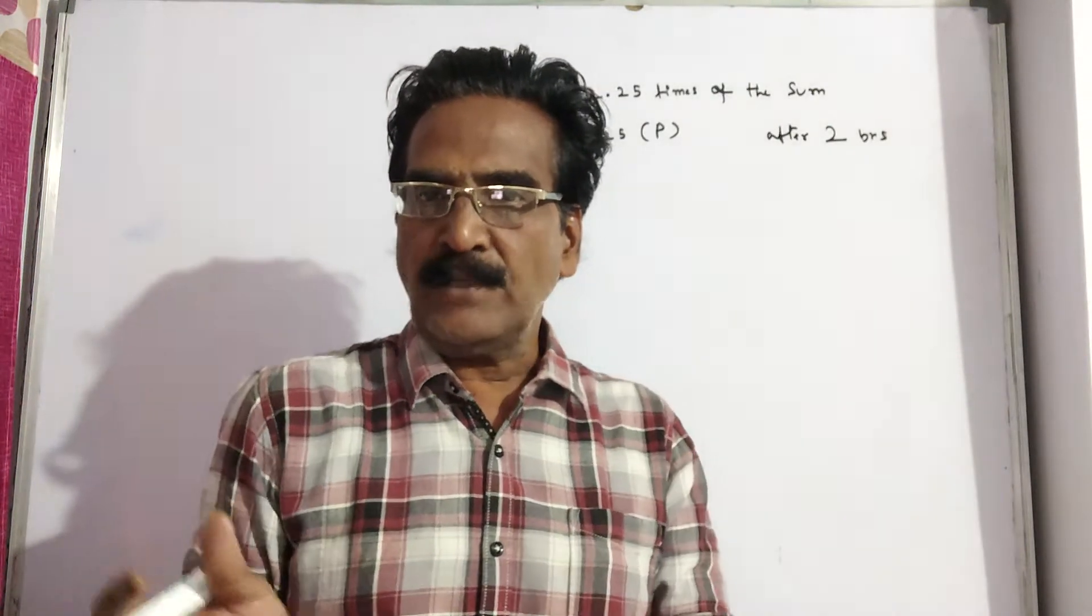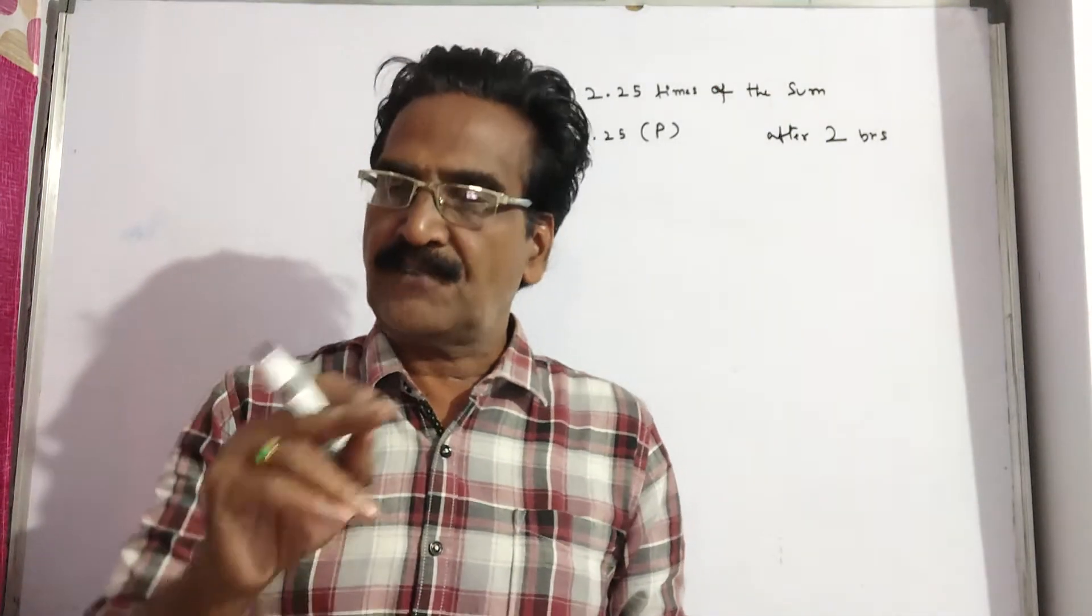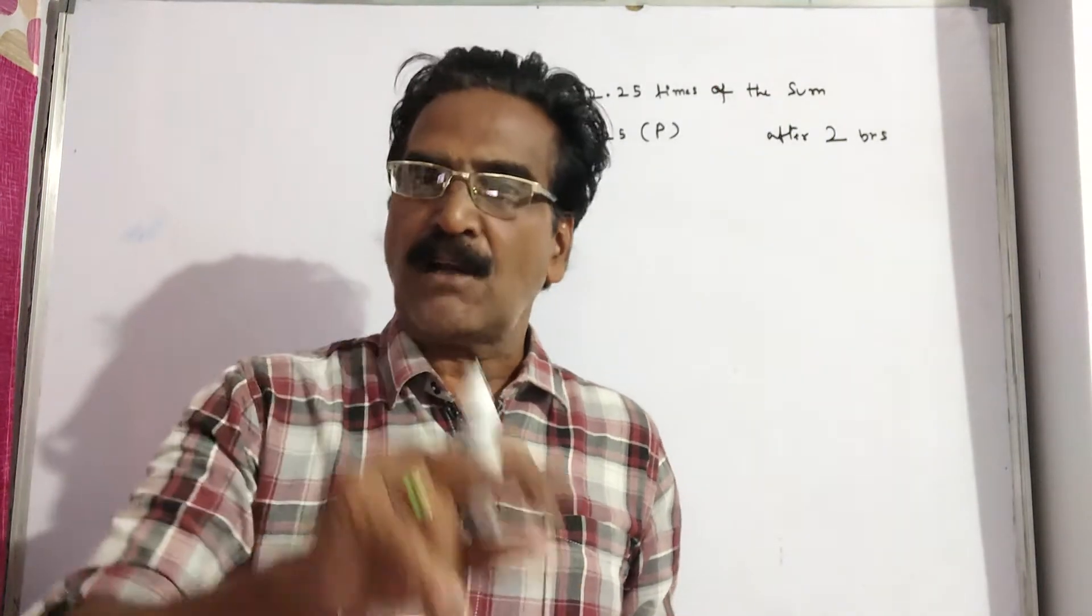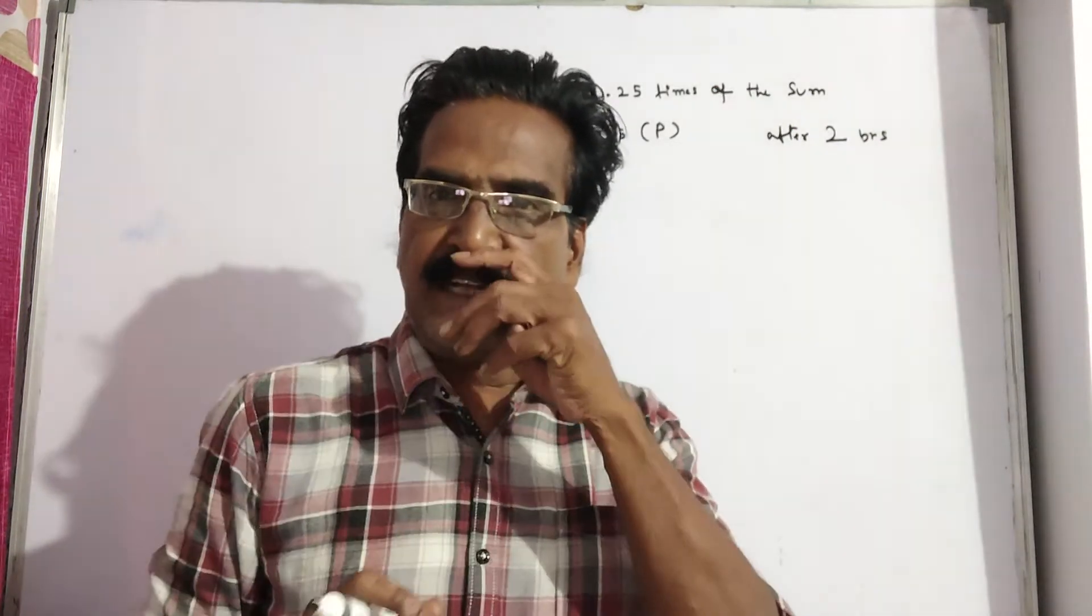If the amount is 2.25 times of the sum after 2 years at compound rate of interest, then what is the rate of interest?